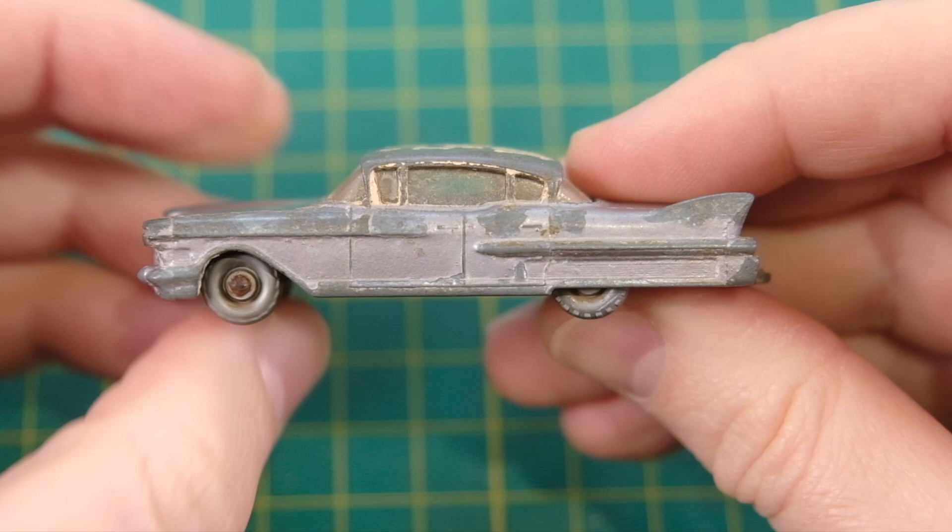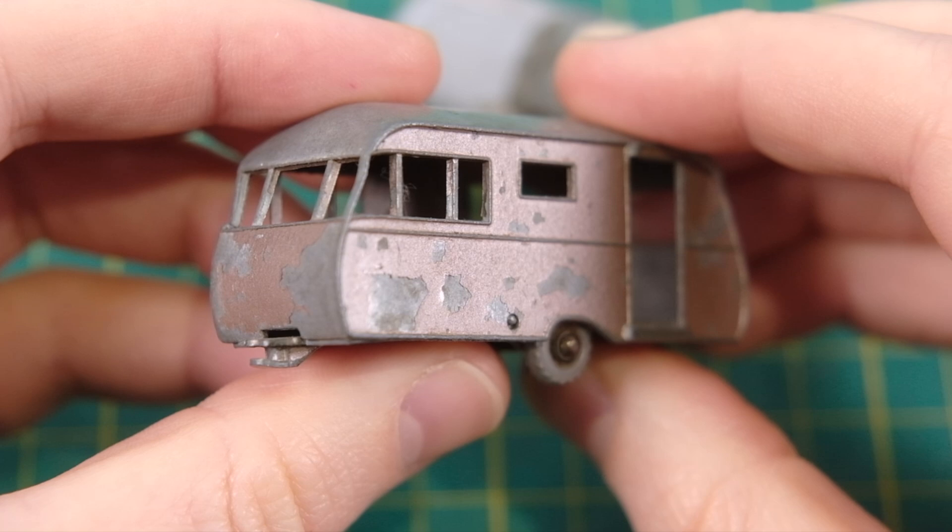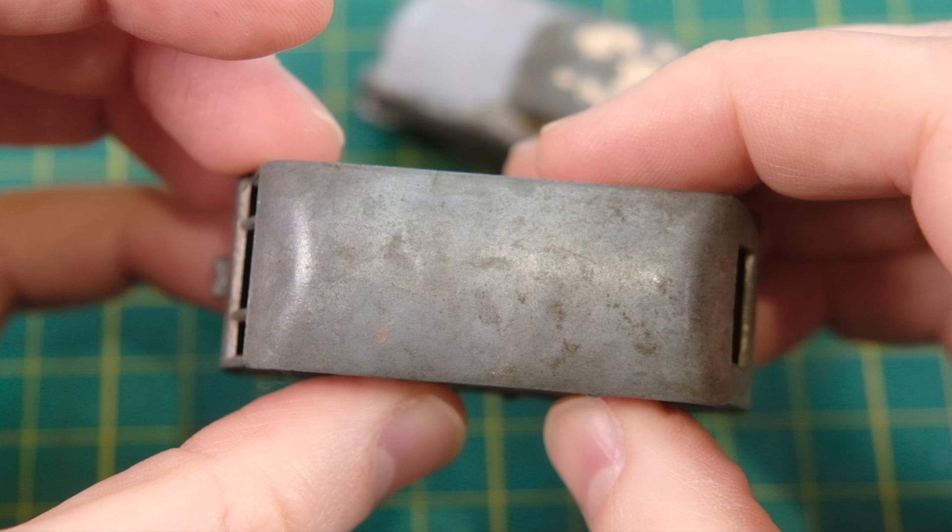You'll note the Caddy has a towing hook so to hook up to it I have this 23C Bluebird Dauphine Caravan missing a door and part of its towing eye. This was produced until 1965 replaced by another caravan the 23D having replaced two previous caravan entries at 23A and 23B respectively.